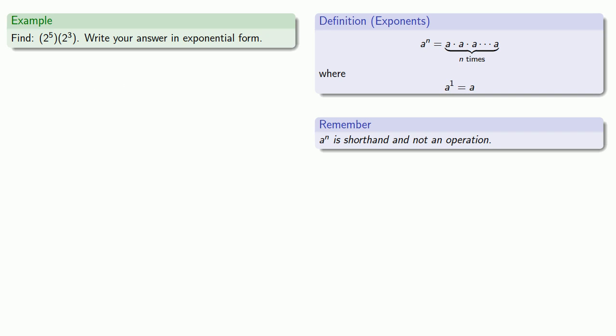So if I want to find 2 to power 5 times 2 to power 3 and write the answer in exponential form, what I have to remember is 2 to power 5 is 5 copies of 2 multiplied together. And likewise, 2 to power 3 is 3 copies of 2 multiplied together.